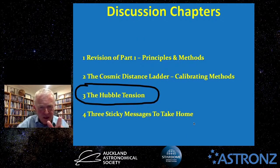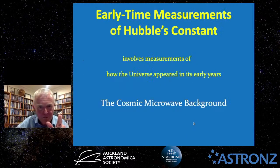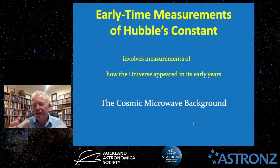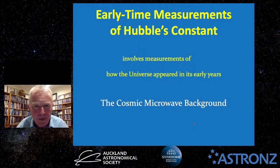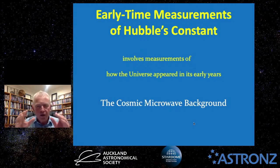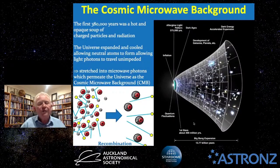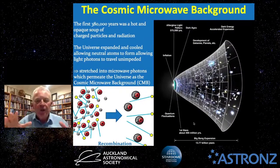That leads us to the Hubble tension. Those late-time measurements give roughly 74. Now, there are also early-time measurements of the Hubble constant, measuring how the universe appeared in its early years, in particular through something called the cosmic microwave background.